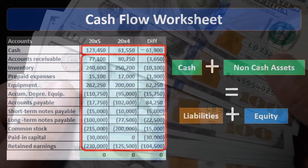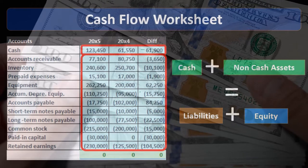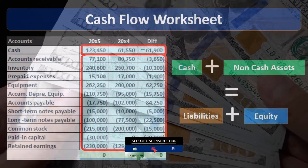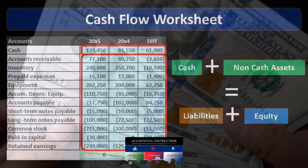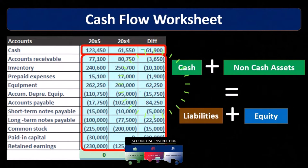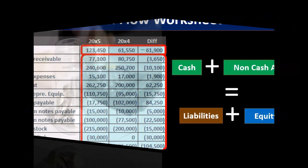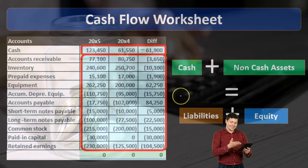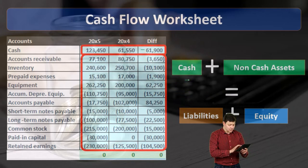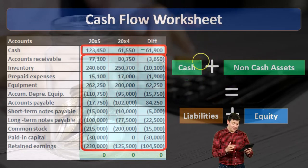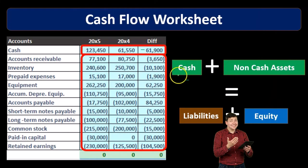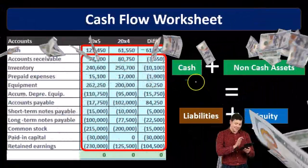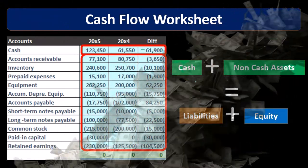The theory here is that we're backing into the cash flow statement. That may seem confusing at first, because you would think we'd look directly at the GL activity and recategorize everything in terms of operating, investing, and financing. But what is more practical is to use the accounting equation: cash plus all other non-cash assets equals liabilities plus equity. By breaking out cash from all non-cash assets and using this formula, we can look at the changes in everything else and back into the cash flow.